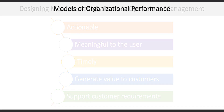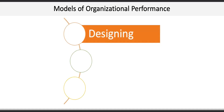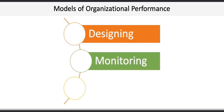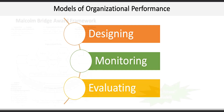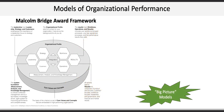The last learning objective described four models of organizational performance used to aid in thinking about designing, monitoring, and evaluating performance. These models include the Malcolm Baldrige Award framework, which focuses on organizational performance excellence through self-assessment to understand a firm's strengths and weaknesses, and then help them set priorities for improvement. This is a strong tie to business strategy.